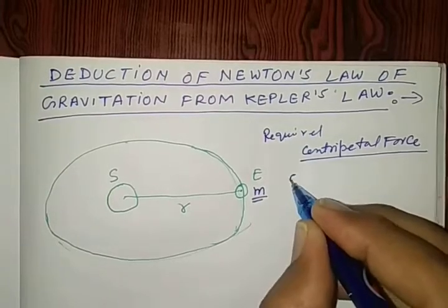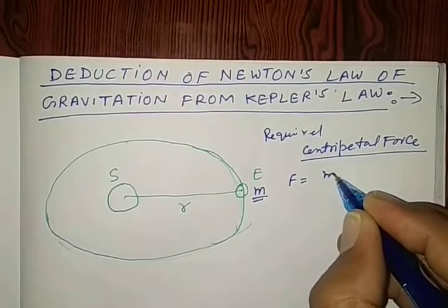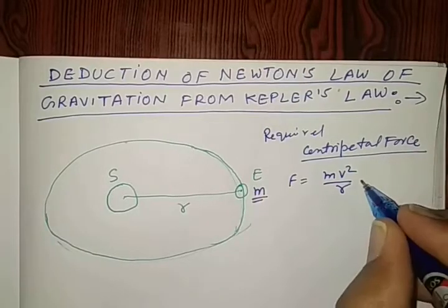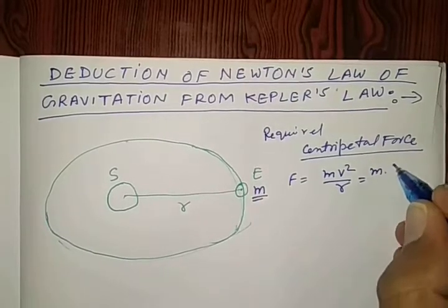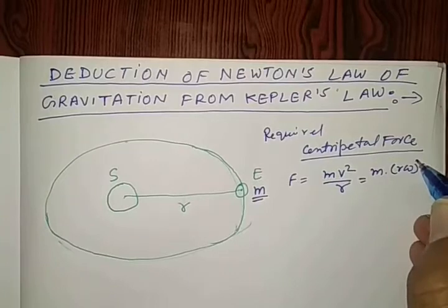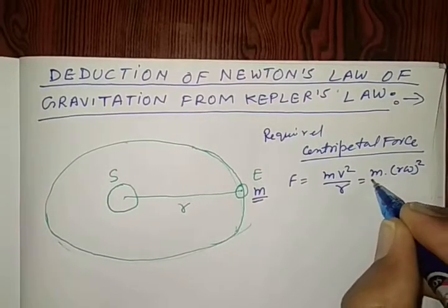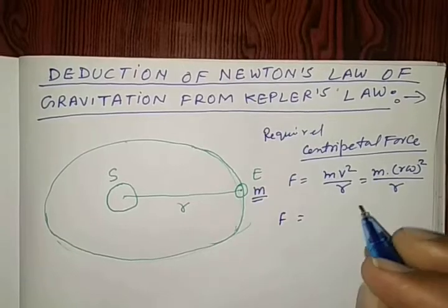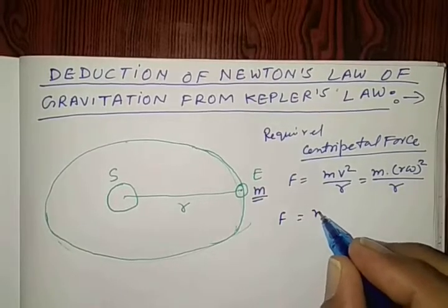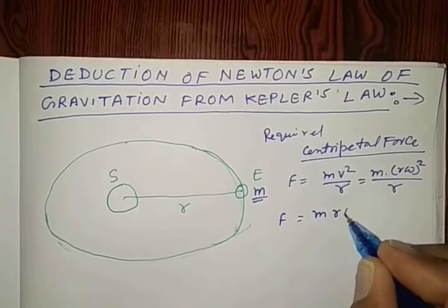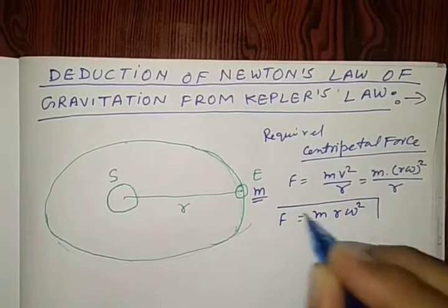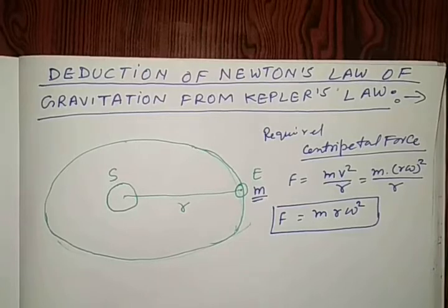force F is given by formula mv square by r. In place of v, we can write r omega. By putting this value, one may write the centripetal force is m r omega square.